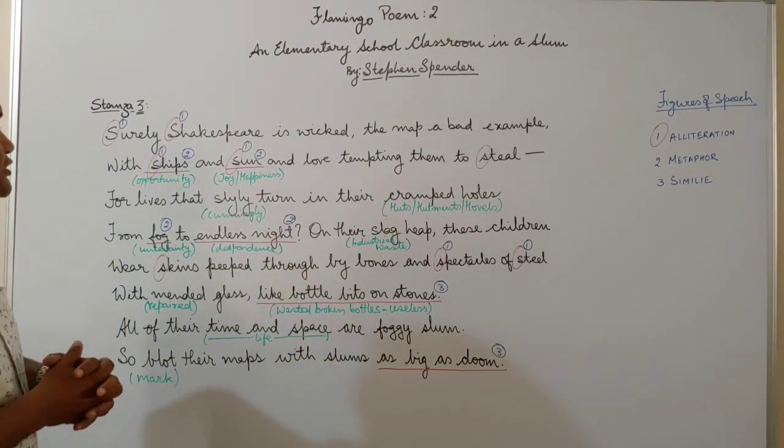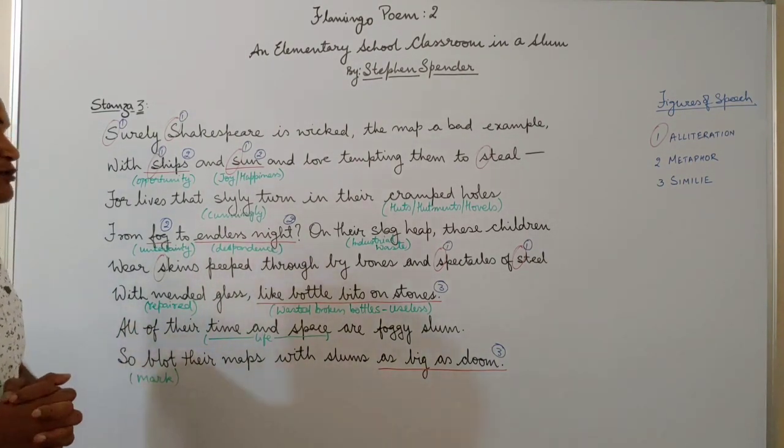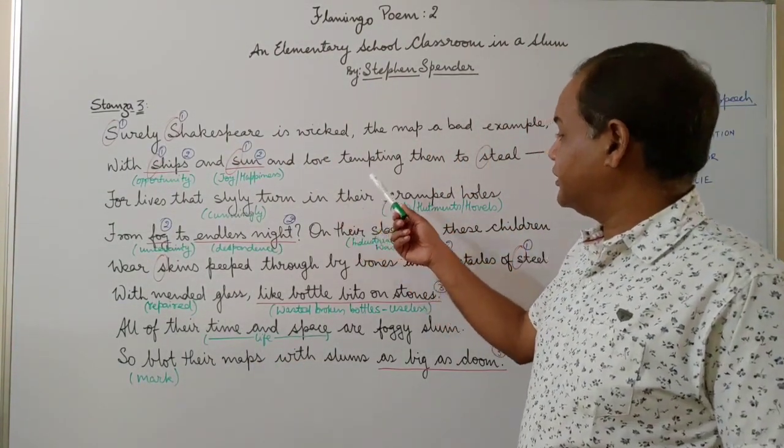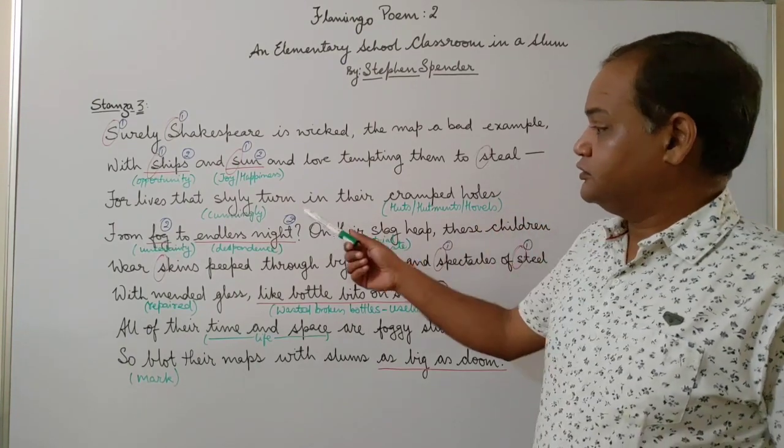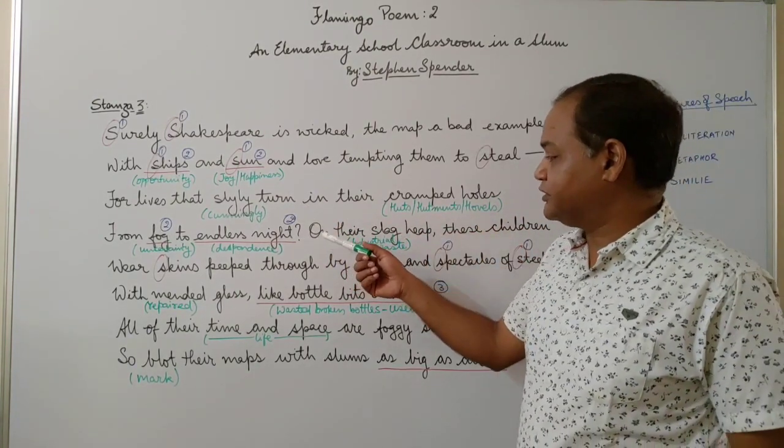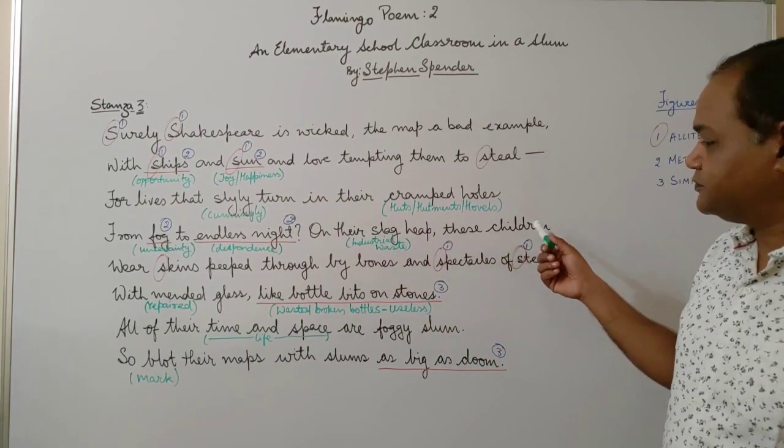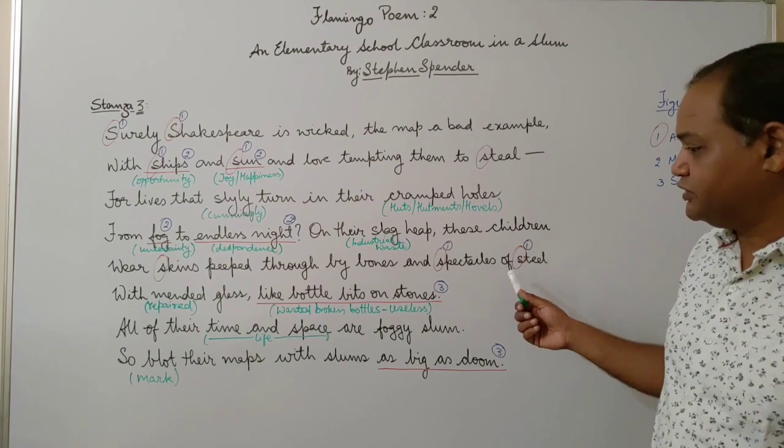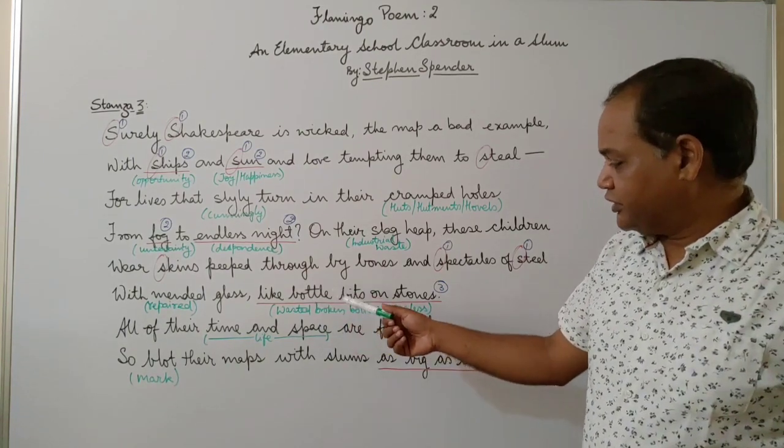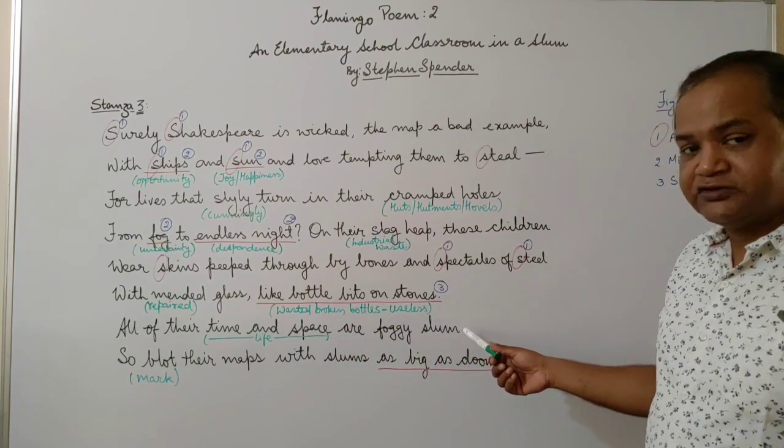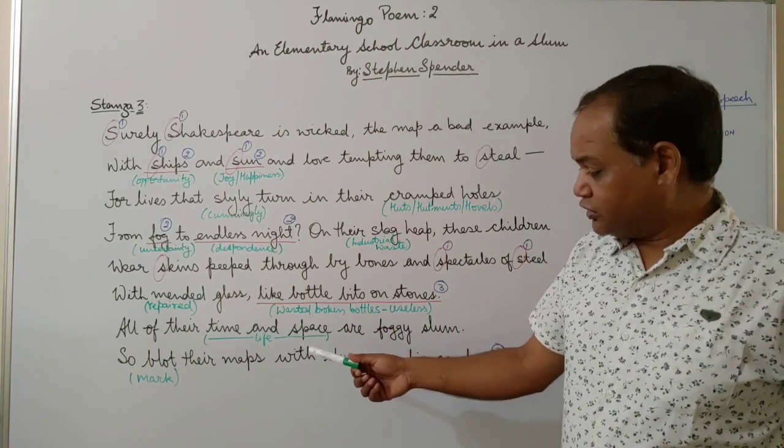So he says: 'Surely Shakespeare is wicked, the map a bad example, with ships and sun and love tempting them to steal. For lives that slyly turn in their cramped holes from fog to endless nights. On their slag heap, these children wear skin peeped through by bones and spectacles of steel with mended glass, like bottle bits on stones. All of their time and space are foggy slum, so blot their maps with slums as big as doom.'